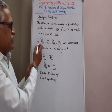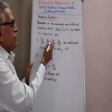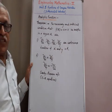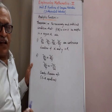There are two conditions. Condition number one: all partial derivatives ∂u/∂x, ∂u/∂y, ∂v/∂x, ∂v/∂y are continuous functions of x and y in origin R. That is the first condition.